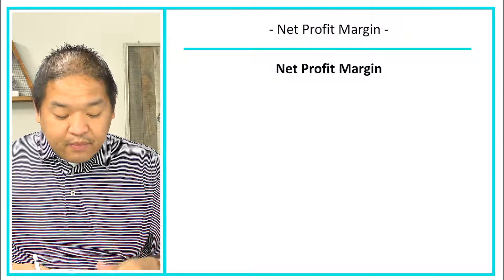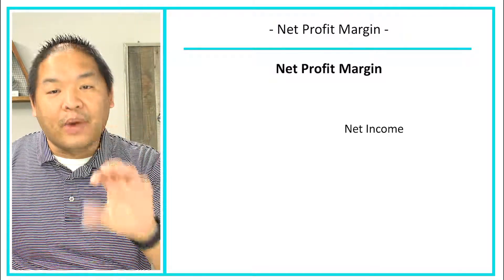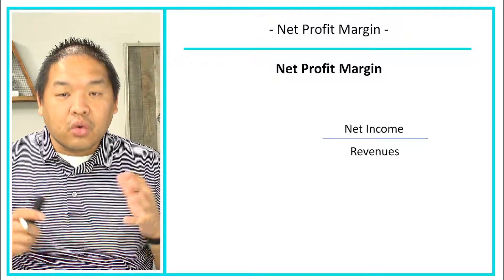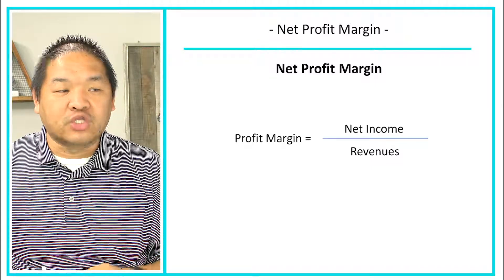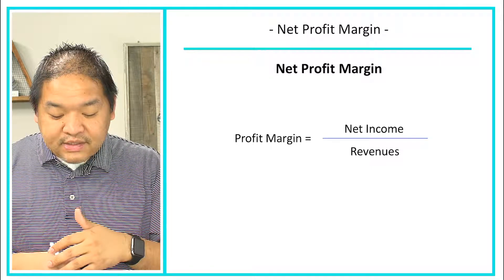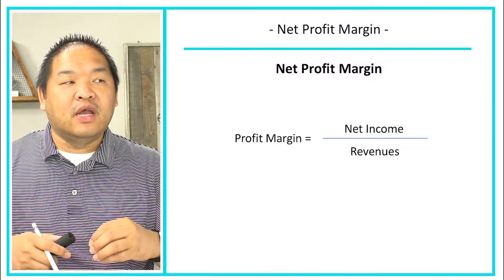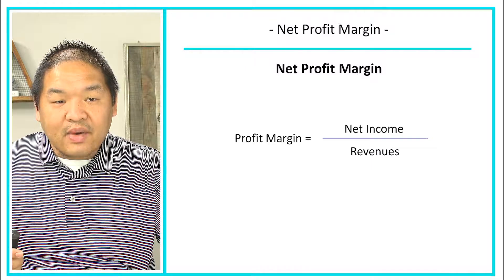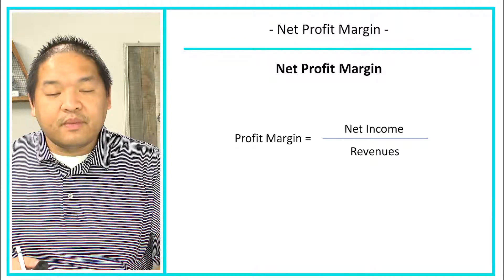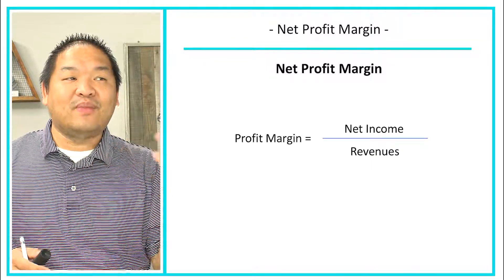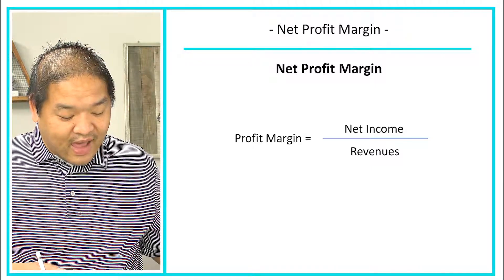The equation for the net profit margin looks like this: we start with our net income — our bottom line income — and we divide it by our total revenue. So net income divided by revenues gives us the net profit margin. We obviously want to see the profit margin as big as we can, but profit margins are usually not over a hundred percent because you can't make more than you actually take in.